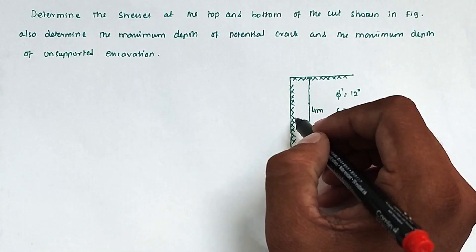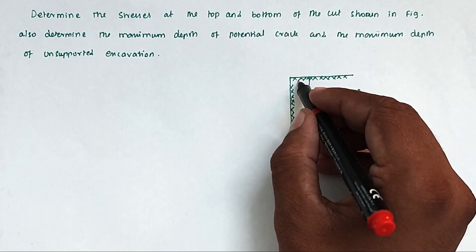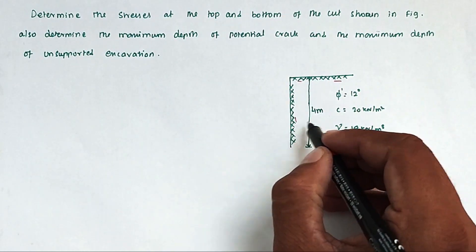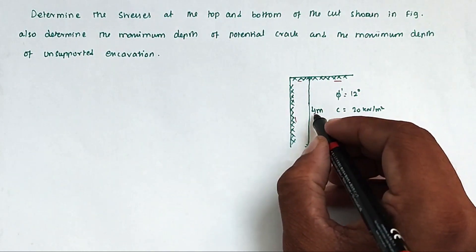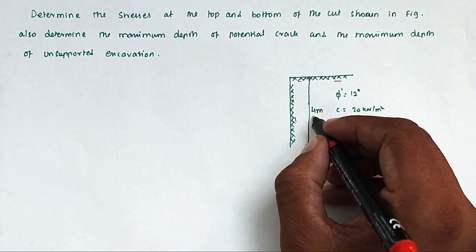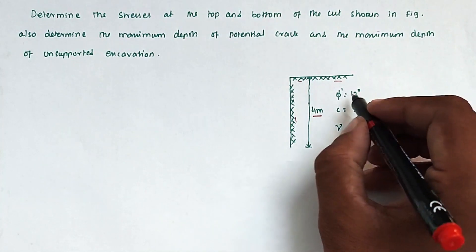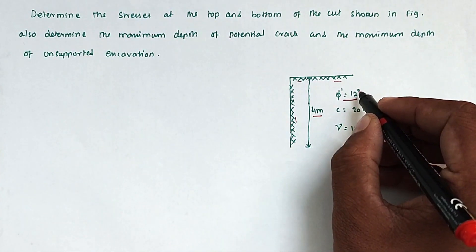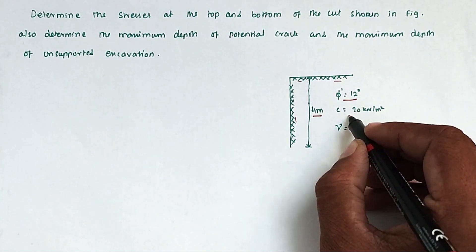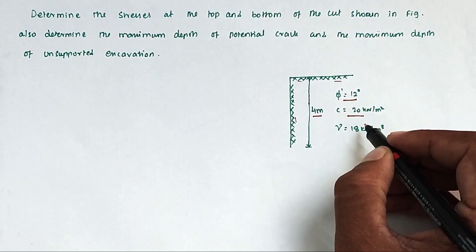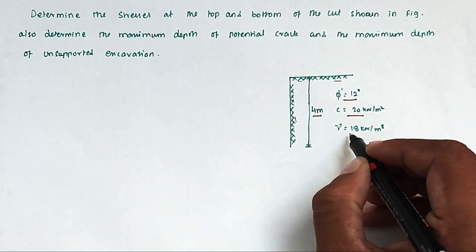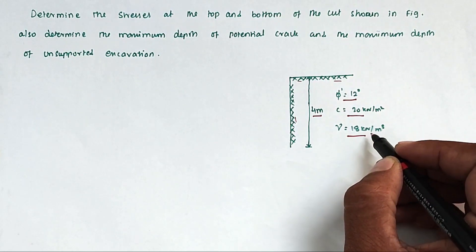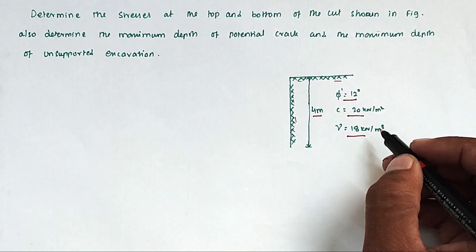So this is the cut, and this is the ground level. The depth of cut is 4 meters. The angle of local shear failure φ is 12 degrees. C equals 20 kN per meter square, and gamma, the unit weight of soil, is 18 kN per meter cube.